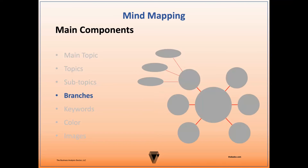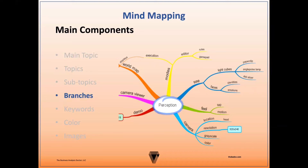Now we have our branches. These are the lines that connect or associate the main topic, topic, and subtopic nodes with one another. When using a node-based mind map, the branches are often referred to as node lines. Branches are illustrated in different ways based on the type of mind map you create. For example, with some of the more free-flowing formats that don't have nodes, the topic and subtopics may sit on top of the branches, as you can see here.